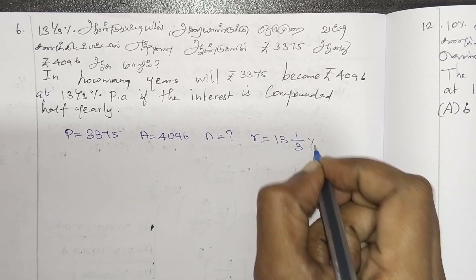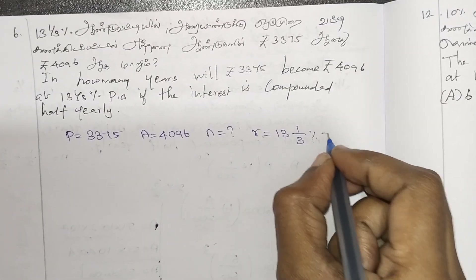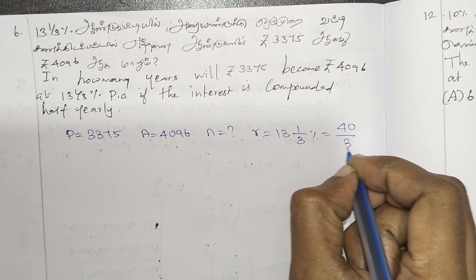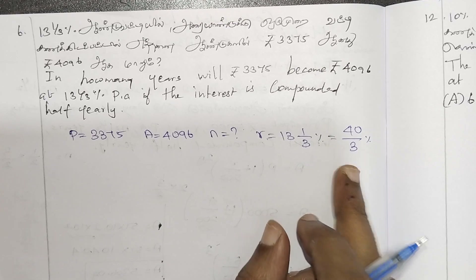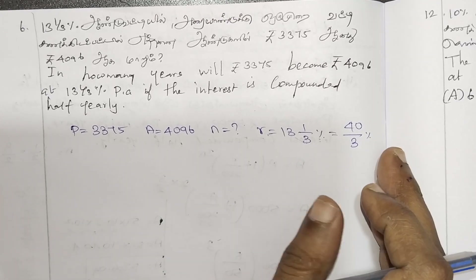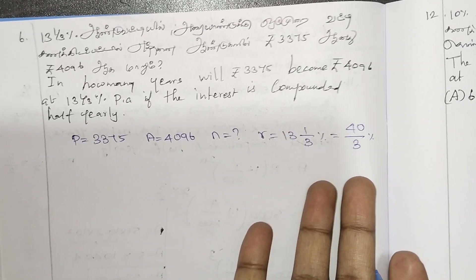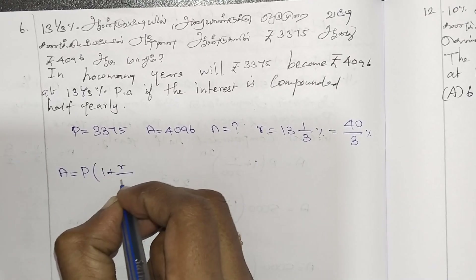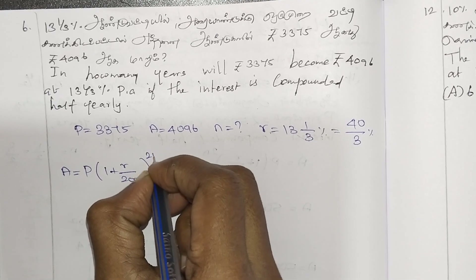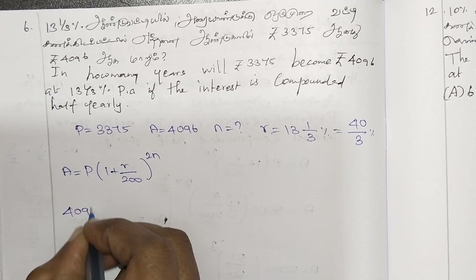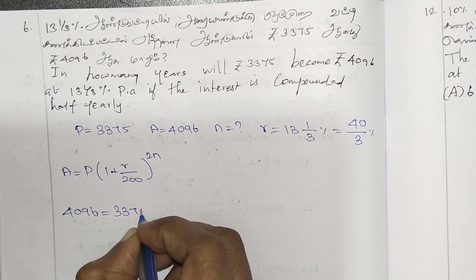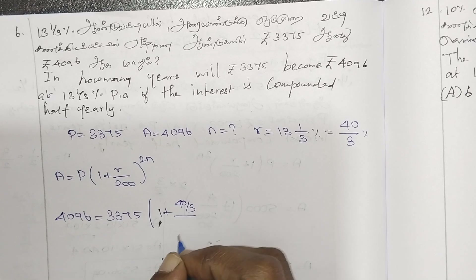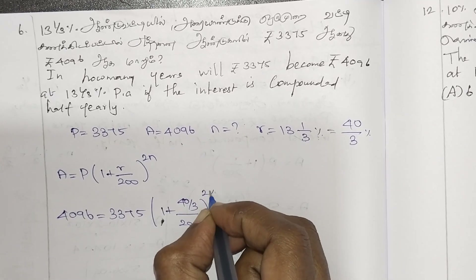Rate of interest is 13 and 1 by 3 percent. Converting: 13 into 3 is 39, plus 1 is 40, so R equals 40 by 3 percentage. We have the formula A equals P into 1 plus R by 200, whole power 2N. A equals 4096, P equals 3375, 1 plus R is 60 by 3 divided by 200, whole power 2N.